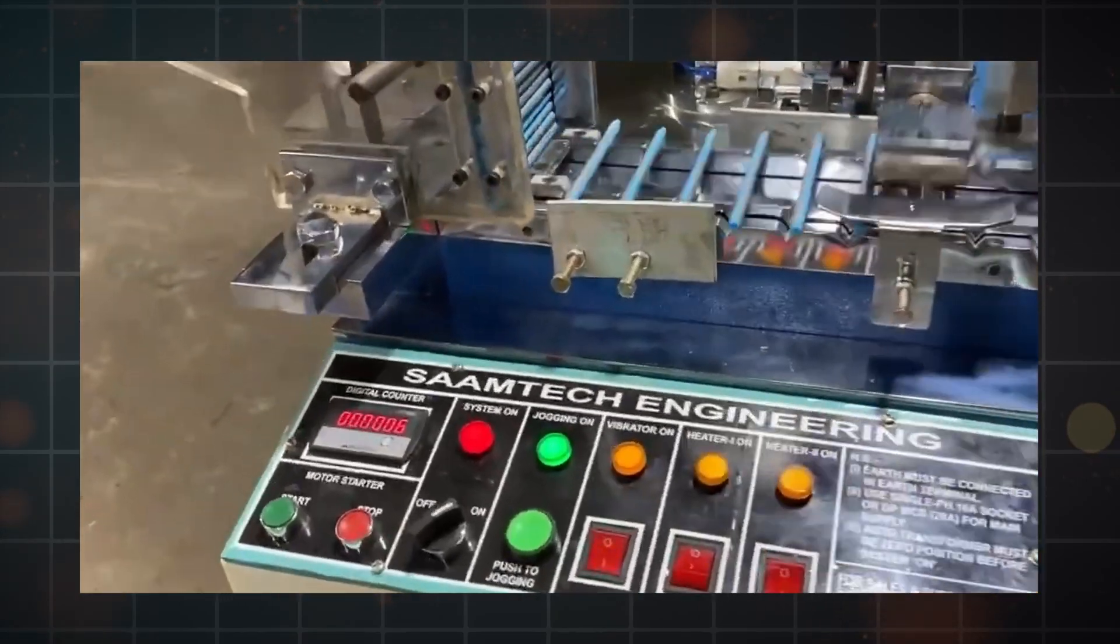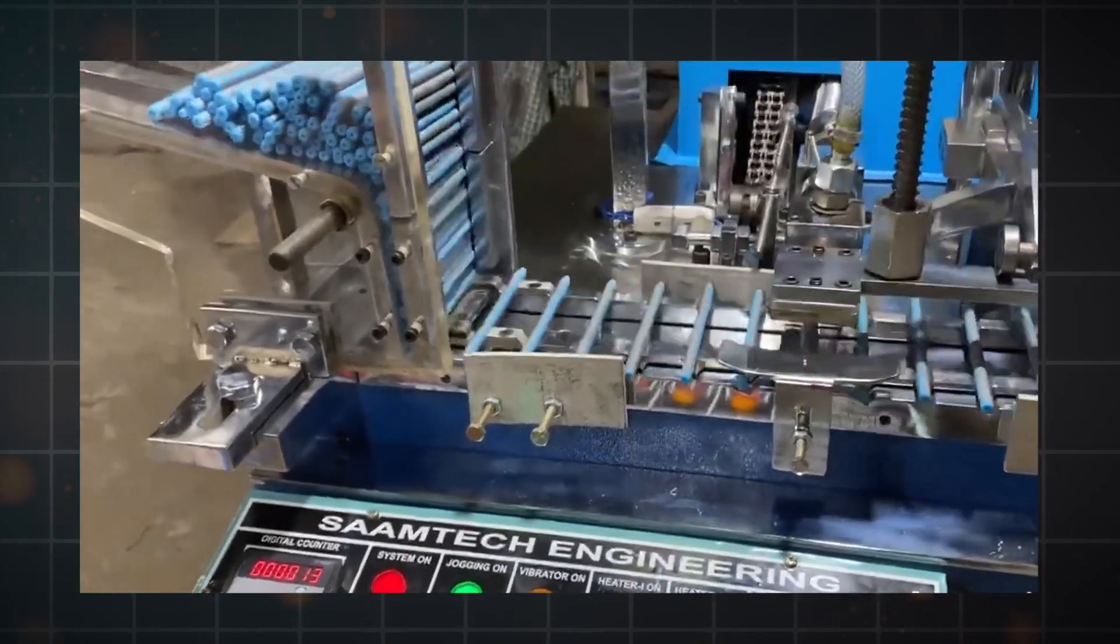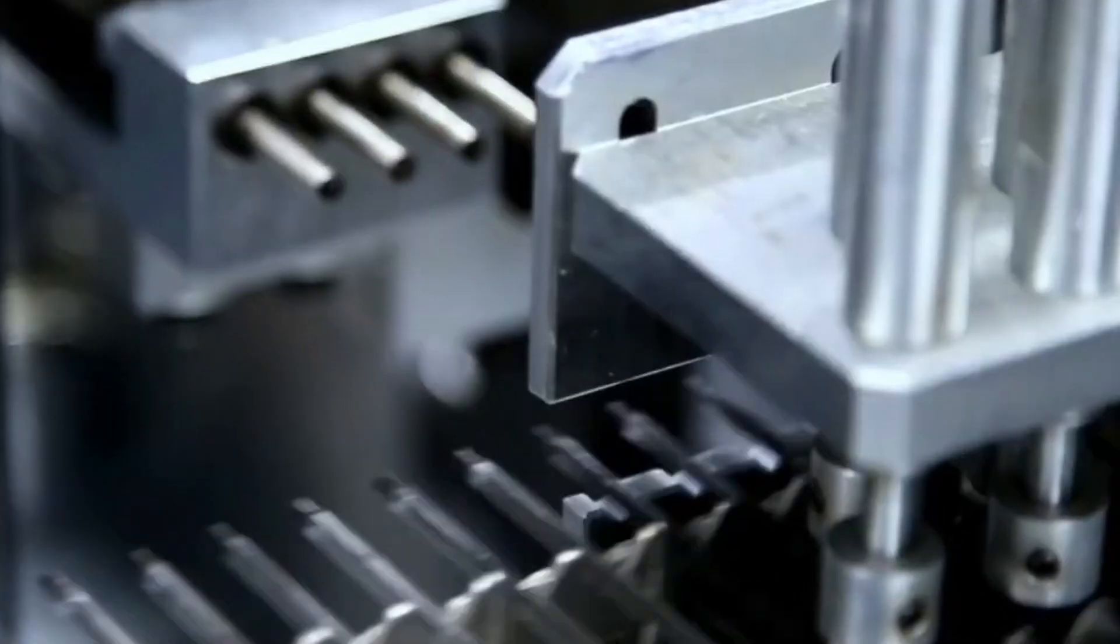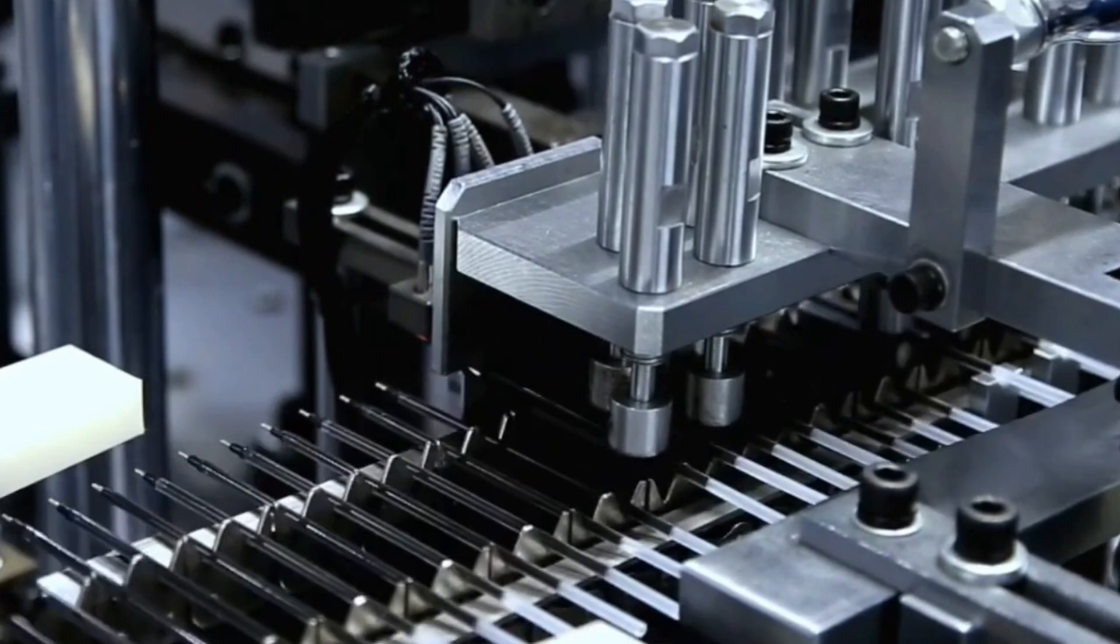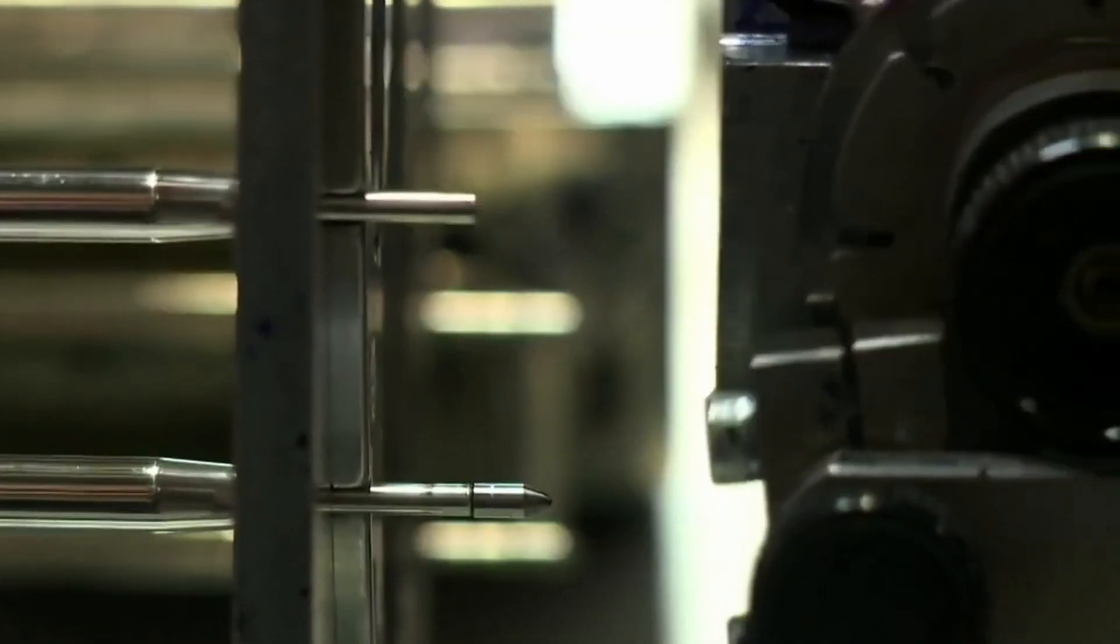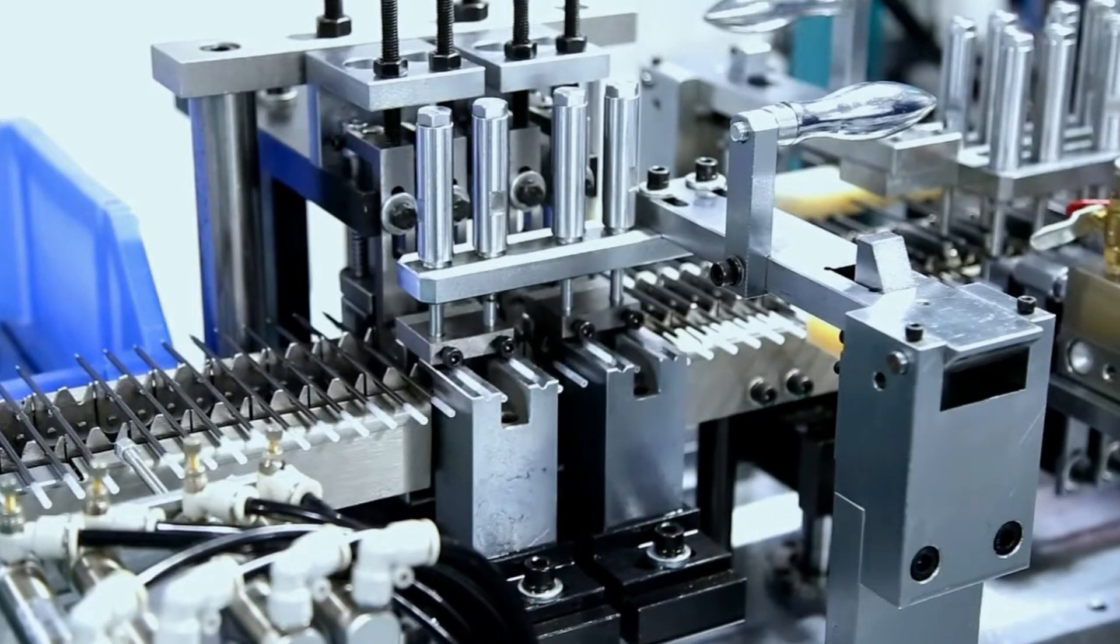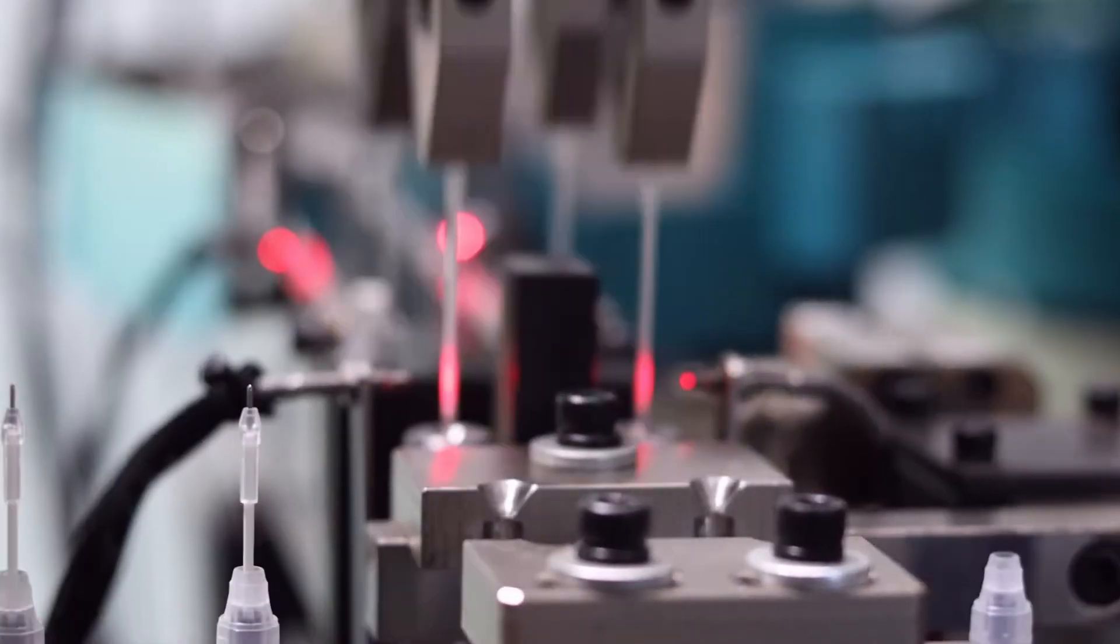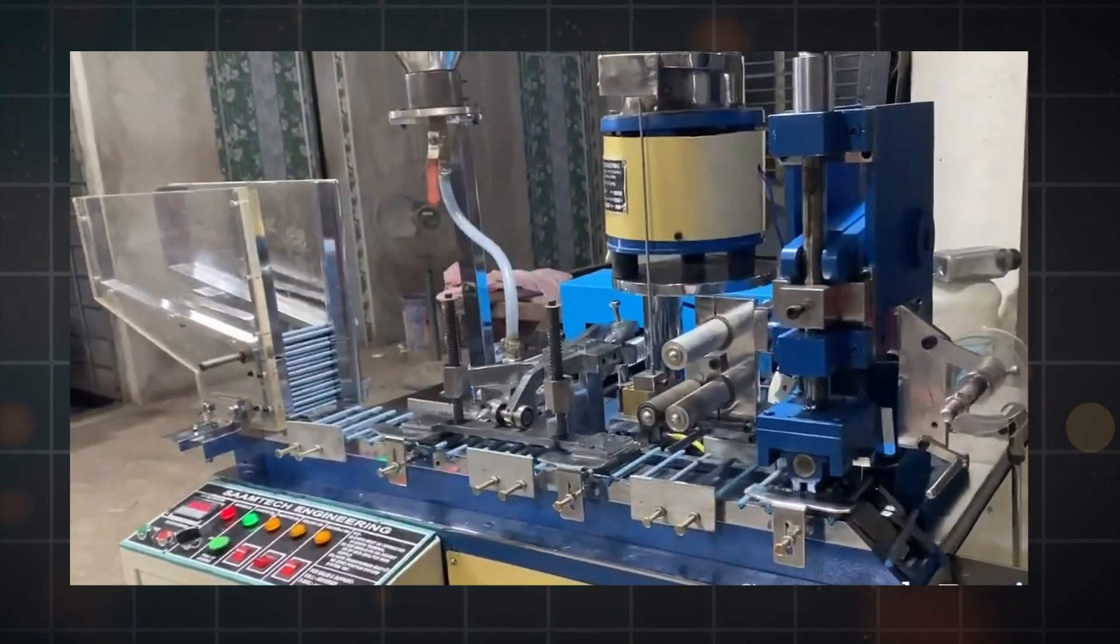Each pen goes through a number of quality control checks while it's being put together. These tests make sure that the pen works well and looks good. Some of these tests could be making sure the ink flow is smooth and even, or checking the mechanics of retractable pens to make sure that the mechanism that pulls them back in works consistently. Usually, automated production lines are used to make sure that each pen is put together quickly and correctly. This technology helps keep the quality of thousands of pens the same while speeding up production to meet high demand.